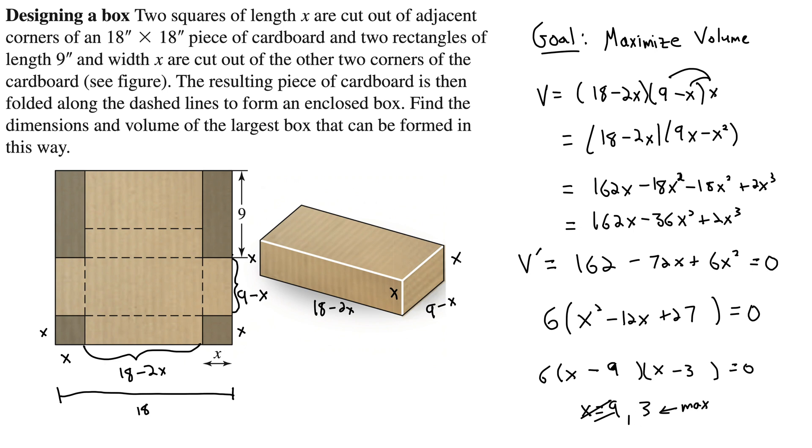Now we're ready for our dimensions of our box. We know that our height is 3, so I'll just say 3 inches. Let's look at our original box drawing here. We have X. Our next one is 9 minus X, so 9 minus 3 is 6 inches. So we'll say 6 inches. Our last one is 18 minus 2X, so that's 18 minus 6, which is 12. So 3 by 6 by 12 inches is the size of our box of maximum volume obtained using this method of cutting out corners and folding up flaps.